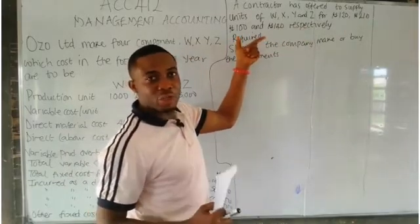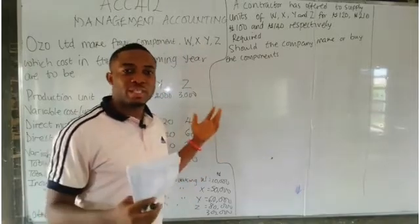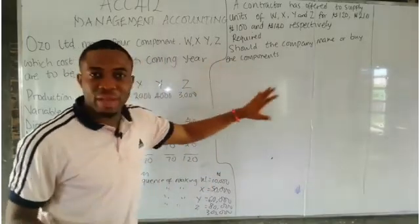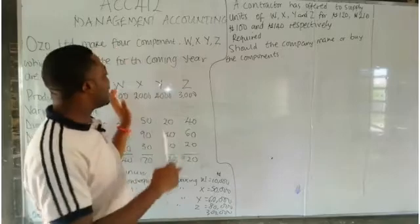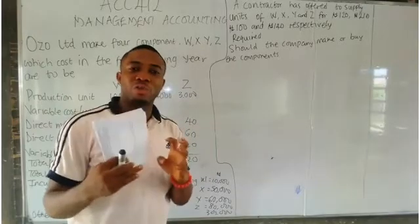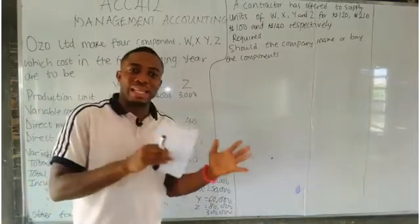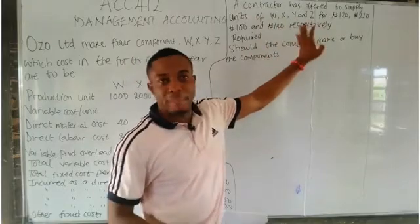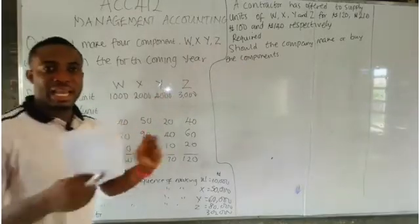Required: should the company make or buy the components? The manager is in a dilemma and has brought this to you as a management accountant in the firm to analyze. You should give an analysis after calculation to verify if the company should make the components or buy them from outside. We compare and contrast their costs — the firm only makes internally when the cost is less than what they would buy outside.